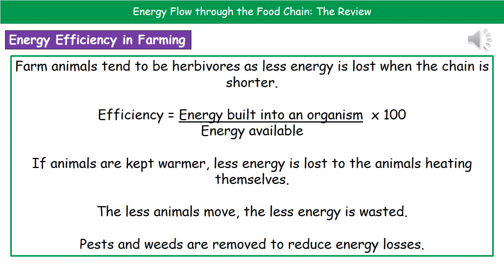We can actually calculate the efficiency using the formula: energy built into an organism divided by the energy available, times by 100. That gives us a percentage efficiency, so the farmer can work out if what they're doing is working or not.